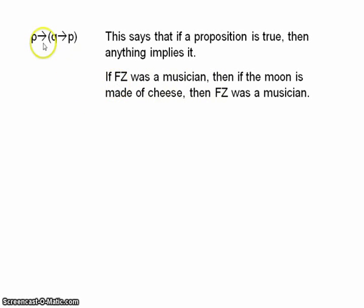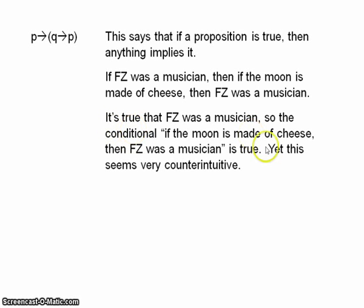If Frank Zappa was a musician, P, then if the moon is made of cheese, then Frank Zappa was a musician. So, if P, then if Q, then P. Obviously, Frank Zappa was a musician. So, by modus ponens, we can derive if the moon is made of cheese, then Frank Zappa was a musician. So, that conditional there is true. But that seems very, very counterintuitive.